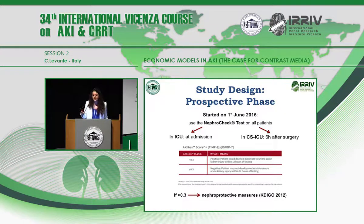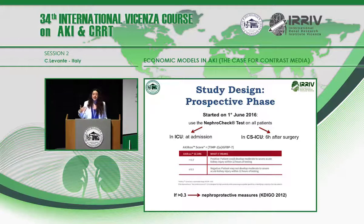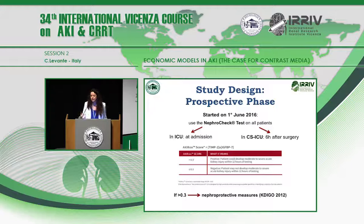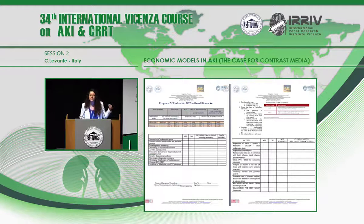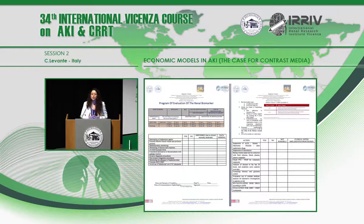In the prospective phase, the Nephrocheck test will be used routinely at San Bortolo Hospital in Vicenza — on all patients at admission to the ICU and six hours after cardiac surgery. The test provides a biomarker value with a threshold already identified at 0.3. If the value is higher than 0.3, the patient has a high risk of developing AKI within the following 12 hours, meaning nephroprotective measures must be undertaken according to KDIGO guidelines in order to prevent worsening of patient conditions.